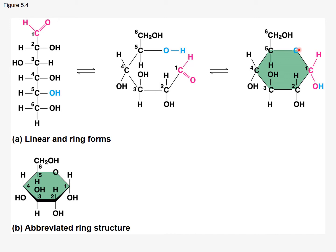What used to be the hydroxyl group on carbon number five is now an oxygen that's part of the ring system. Carbon number one, which used to be an aldehyde group, now has a hydroxyl group — the hydrogen lost from carbon five is now attached to the oxygen on carbon one. At carbon number six, we have the CH₂OH hanging off of the ring system, so carbon number six is not part of the ring.